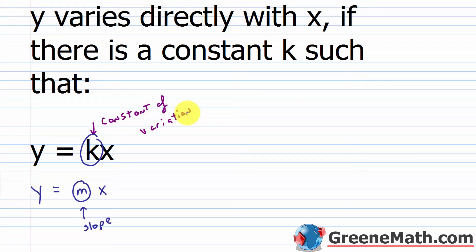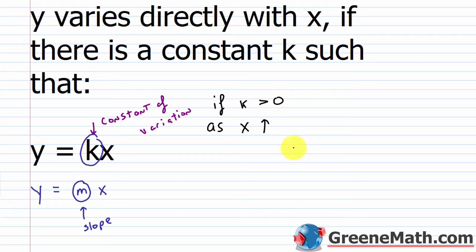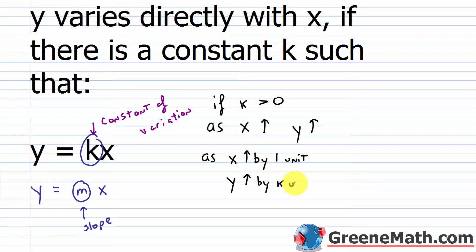In direct variation, this is known as the slope, but we change it and call it the constant of variation. Same equation, same properties. As x increases, if k is positive, then y is going to increase. More specifically, as x increases by one unit, y increases by k units — by that constant of variation multiplying x, or you can think of it as the slope.